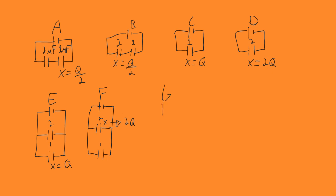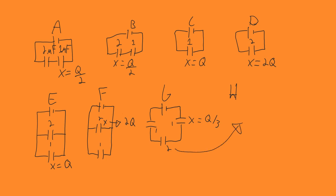For G, we have three capacitors in series with capacitances 1, 2, and 1 microfarads. For capacitors in series, the charge is going to be equal no matter the capacitance. We're concerned with one of them, and it's going to have Q over 3. For H, similarly with three capacitors in series, the charge is going to be Q over 3. I hope this helps you figure out the charges for different sets of capacitors in a circuit, and I will see you in the next video.